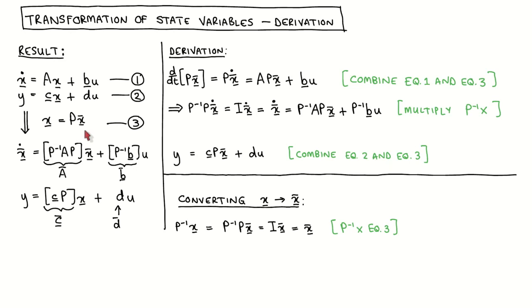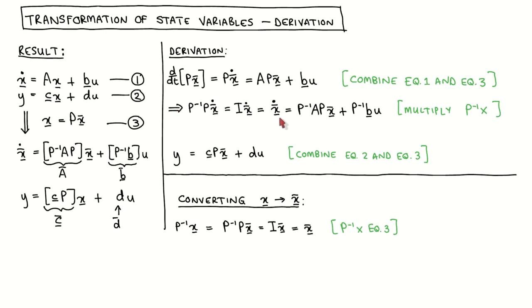We first use equation 3 and substitute P·X̄ for X in equation 1. On the left hand side we now have to calculate the derivative of P·X̄ with respect to time T. Since P is a constant matrix this is simply P times Ẋ̄. On the right hand side we have substituted P·X̄ for X. We want to only have Ẋ̄ on the left hand side, so to get rid of matrix P we left multiply the whole equation with P⁻¹. P⁻¹ times P is the identity matrix and the identity matrix times Ẋ̄ is simply Ẋ̄. On the right hand side we have also left multiplied with the inverse of P and we now have the first part of the result.